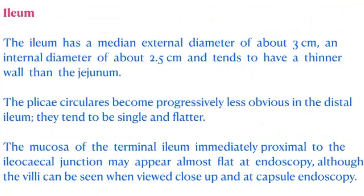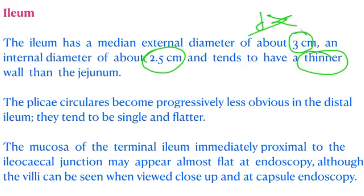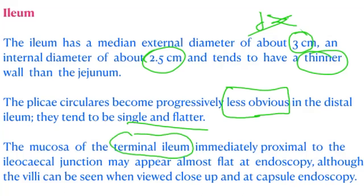The ileum has a median external diameter of three centimeters — less than the jejunum — and an internal diameter of 2.5 centimeters, with a thinner wall. The plicae circularis become progressively less obvious in the distal ileum; they tend to be single and flatter. Progressively they become more and more flattened, and at the terminal ileum they are almost flat.